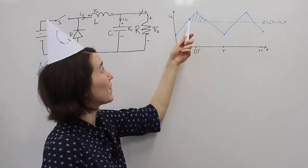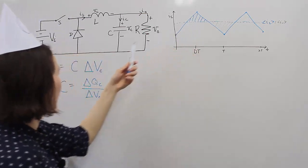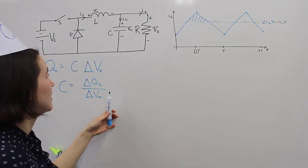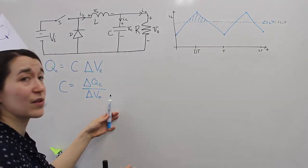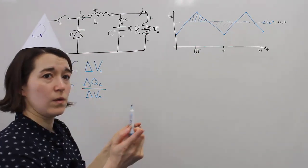So all we have to do is calculate one of these, this triangle of charge, and then substitute that into here, and we can solve for the capacitance level that we need.